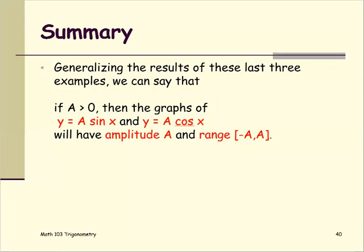In summary, generalizing from these examples: if a is greater than zero, then the graphs of y equals a times sine x and y equals a times cosine x have an amplitude of a, and the range is the interval from negative a to positive a.